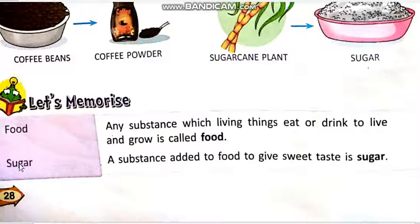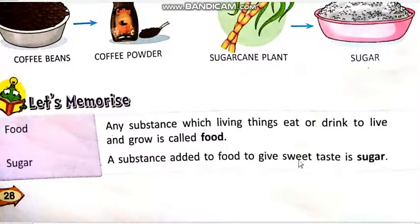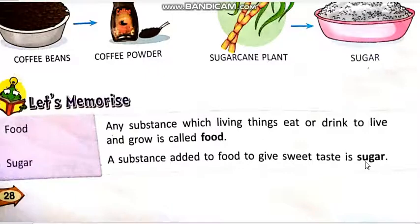Sugar: a substance added to food to give sweet taste is sugar. Sweet — میٹھا. میٹھا ذائقہ یا میٹھا ٹیسٹ دینے کے لئے ہم food میں جو بھی substance add کرتے ہیں، that is called sugar.